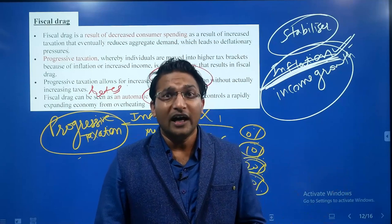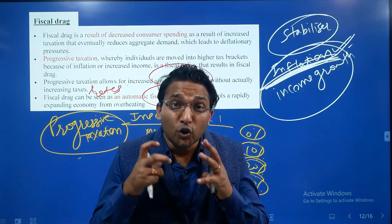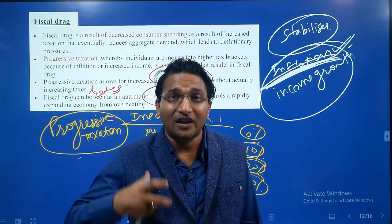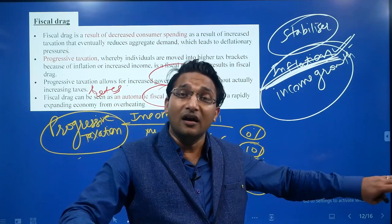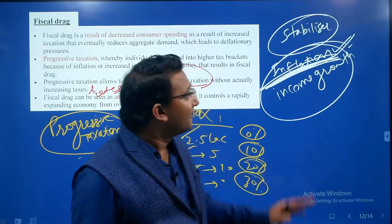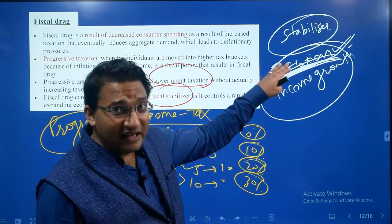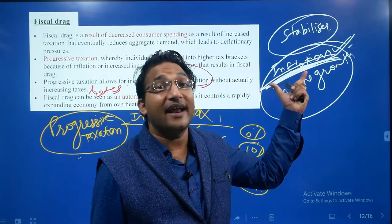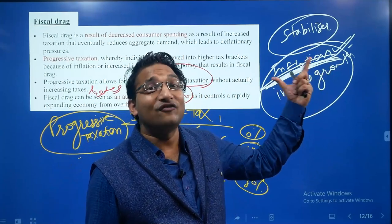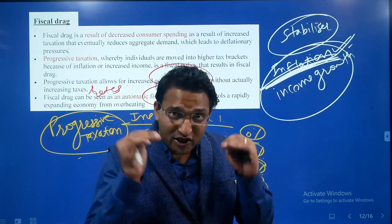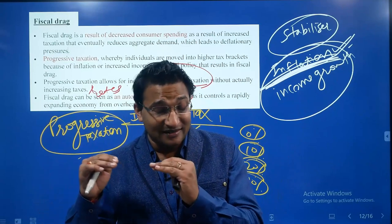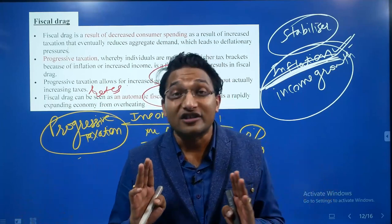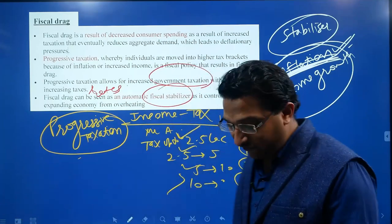If inflation goes beyond control — especially beyond 6% in the context of India — it will eat away savings of poor people and create a huge burden on their day-to-day expenditure. This is called an unlegislated tax, a tax not levied by the government but which eats away savings and income. Progressive taxation acts as a rescue in high-growth situations by reducing consumer spending through increased tax expenditure, preventing inflation from going beyond control. So fiscal drag also has a positive phenomenon.